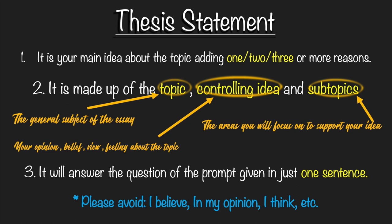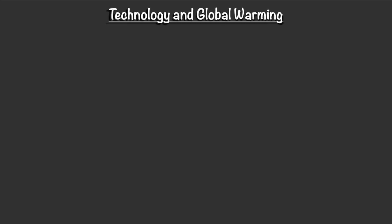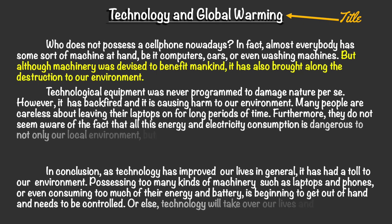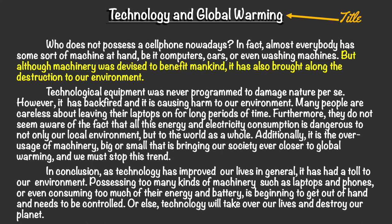So now let's take a look at the concluding paragraph. First, let's take a look at our example: 'Technology and Global Warming.' This is your title, and should be at the top of your essay. The first paragraph is the introductory paragraph, in which we have the thesis statement — that is your last sentence of your introductory paragraph. The second paragraph is your body, and the third paragraph is the concluding paragraph. And this is what we're talking about today. Don't forget to indent all paragraphs.